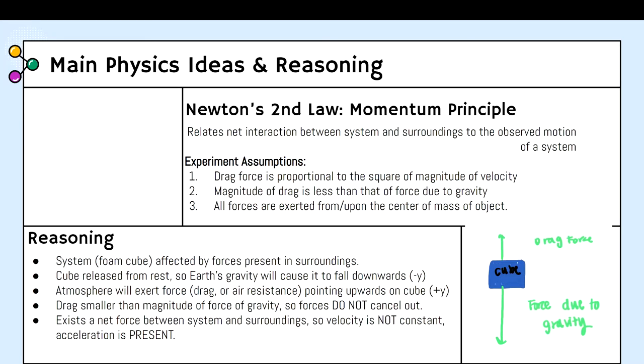We are assuming that drag is smaller than the magnitude of the force of gravity, so the forces do not cancel out. Thus, there is a net force present between the system and the surroundings, so velocity is not constant and there is acceleration. Some other experimental assumptions are listed above.